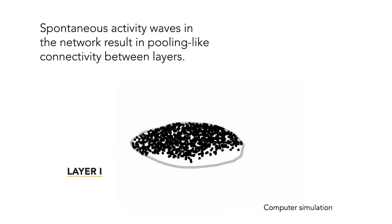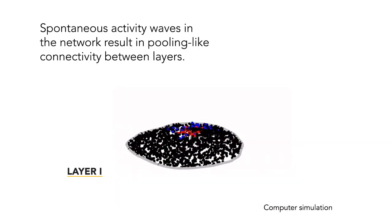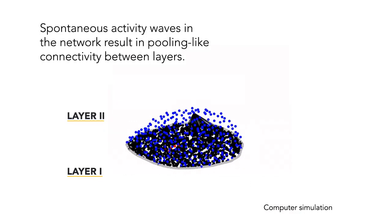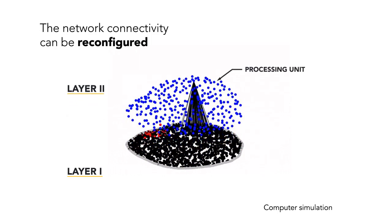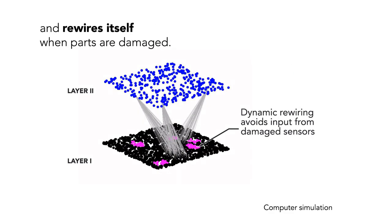Spontaneous activity waves in the network result in pooling-like connectivity between layers. The network connectivity can be reconfigured, and it rewires itself when parts are damaged.